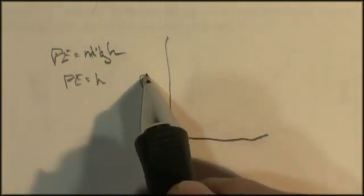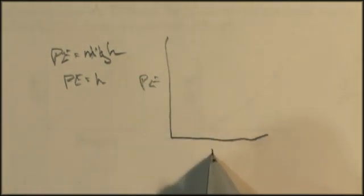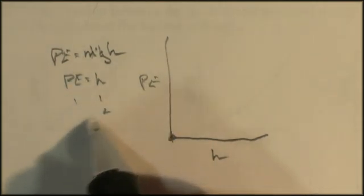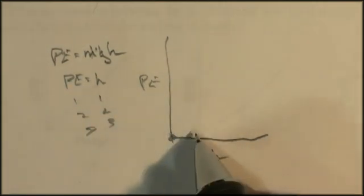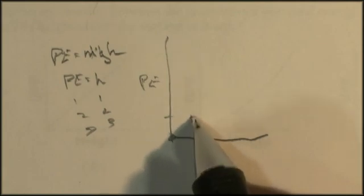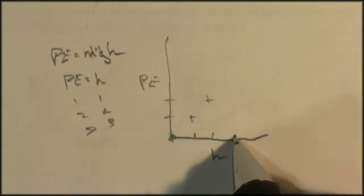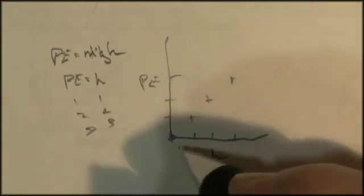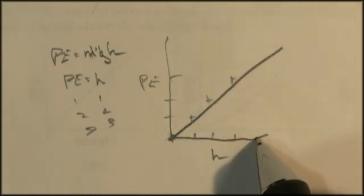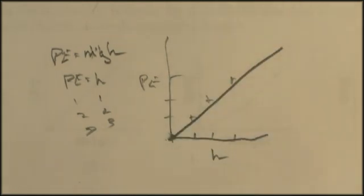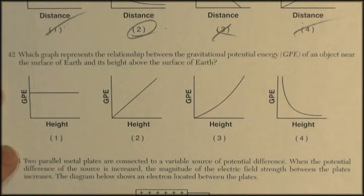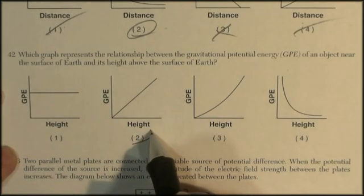The mass is going to stay the same, and the acceleration due to gravity will stay the same. Let's just assign the values of 1. So potential energy is basically equal to height. That's proportionality. So if we draw that potential energy, height, for 1 would be 1, 2 is 2, 3 is 3. As the height increases, so does the gravitational potential energy. And purely coincidentally, the answer to that one is also 2.